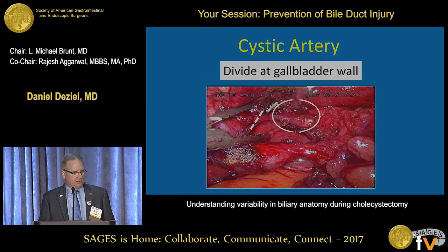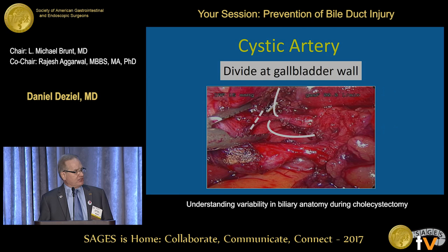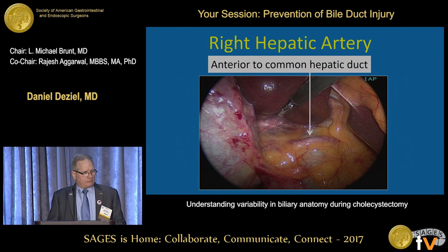When you divide the cystic artery, it should always be at the wall of the gallbladder. There are two reasons for this: one, to protect the right hepatic artery, which can be close; and number two, to avoid compromising either a branch of the artery to the liver or a recurrent branch to the common duct that come from the cystic artery on occasion.